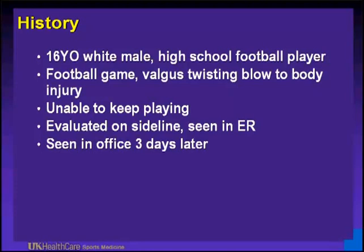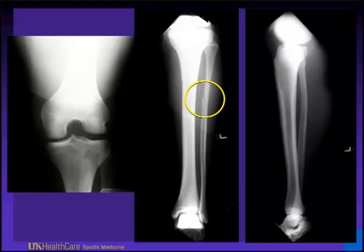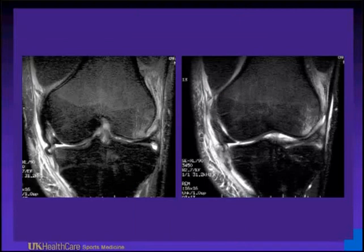This is a 16-year-old high school football player who had a valgus twisting blow to his body. He was unable to keep playing and was evaluated in the emergency room, then seen in the office three days later with significant calf pain. The ER x-rays did not show the tib-fib, but if you have an individual with calf pain, get an x-ray. He had a non-displaced fibula fracture which explained his calf pain — it was bony, not vascular. It was more of a whip kick-type injury from lateral contact. He had an ACL and MCL injury.